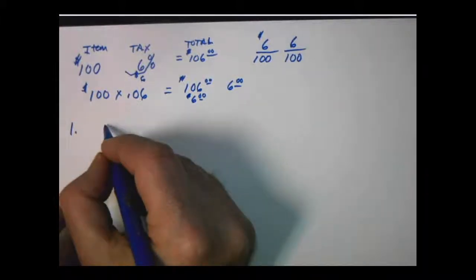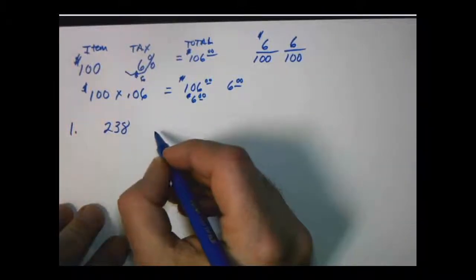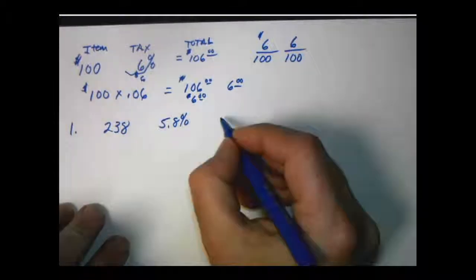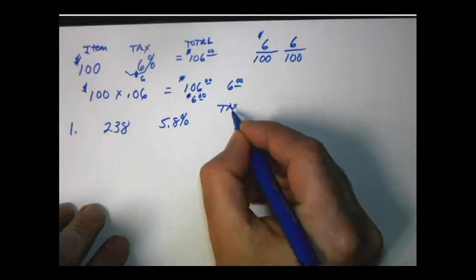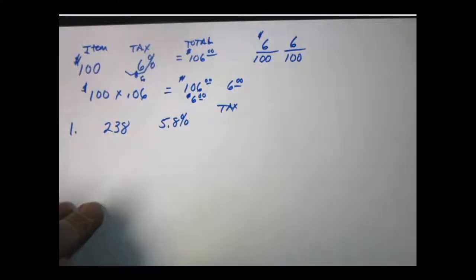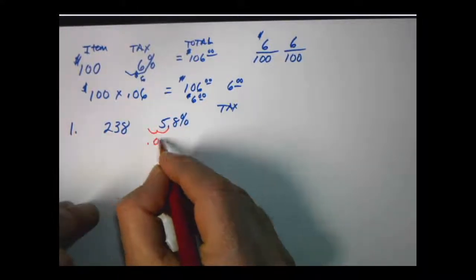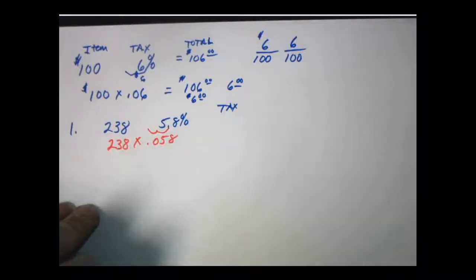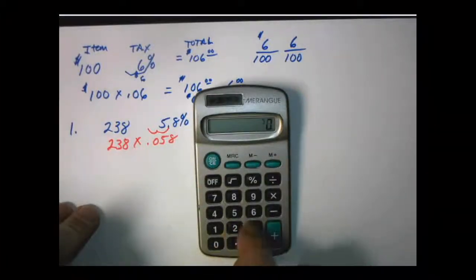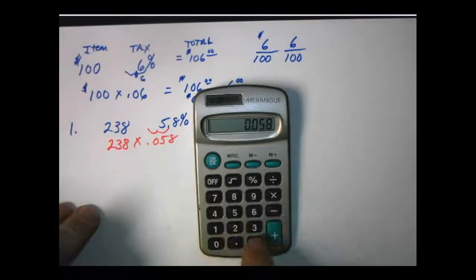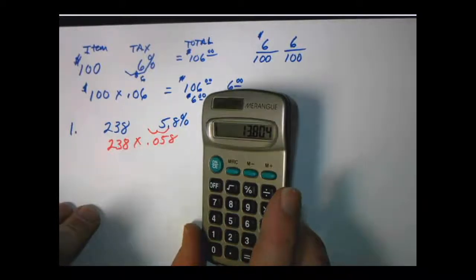So problem number one we have $238 as the marked price. The sales tax rate is 5.8% and they want to know the amount of the tax. So the easiest way probably then is to just simply convert this to a decimal by moving it over two spots to the left. One, two makes this .058 and we're just going to multiply. So when we do that on our calculator we have 238 times .058 equals and so we have $13.80 as the tax.